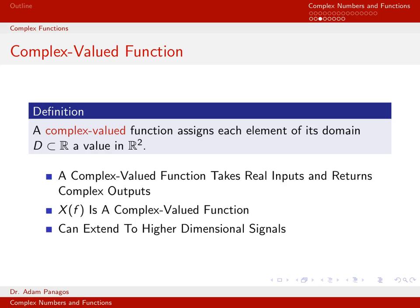A complex-valued function takes real inputs and returns complex outputs. As a specific example, x of f, the Fourier transform of x of t, is a complex-valued function. Its input is some frequency f, which is a real number, so its domain is the entire real line, and in general its output is a complex-valued value. This is a one-dimensional signal because there is only one input, f. For most undergraduate electrical engineering work, one-dimensional signals are what we typically worry about.